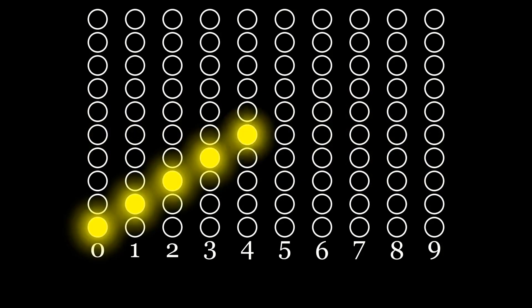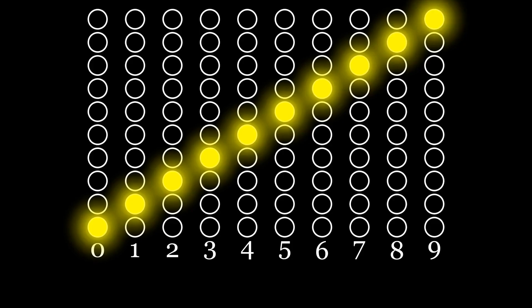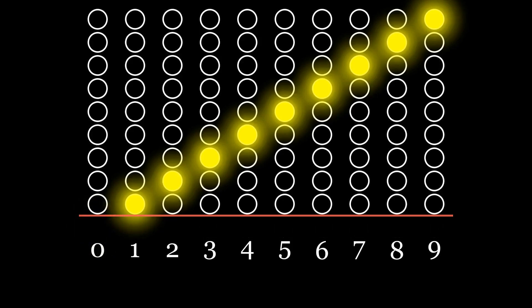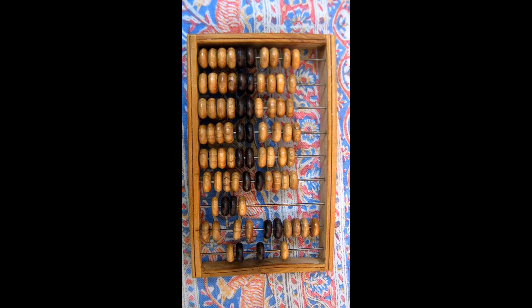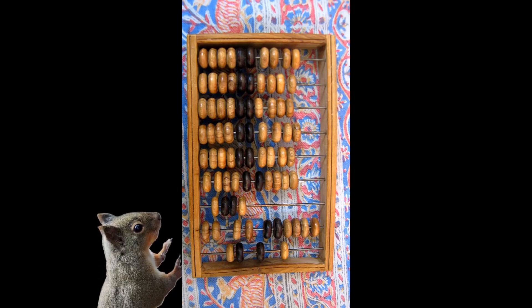instead of having one bulb to mark a zero, you could just represent zero as having all the bulbs turned off. That's how it's done on an actual abacus. Zero is represented by zero beads, not one.